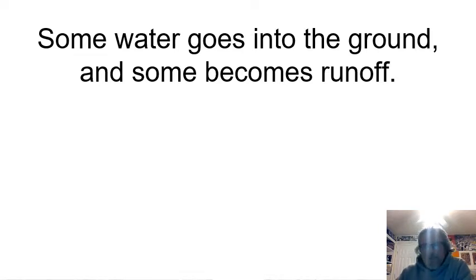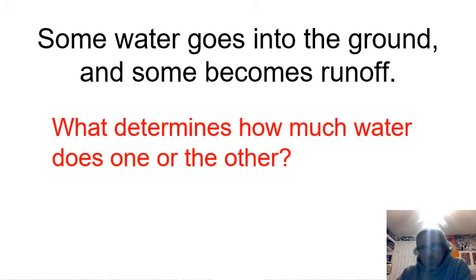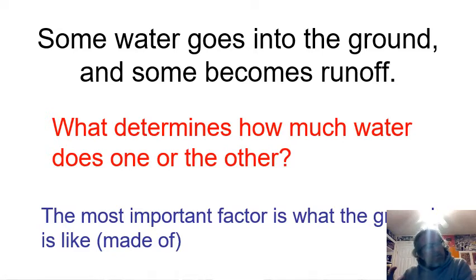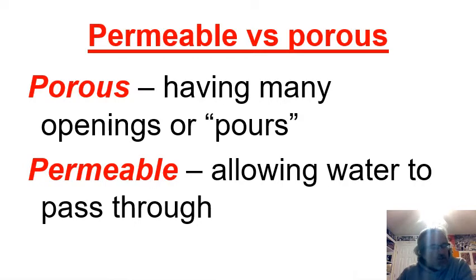Some water goes into the ground and some becomes runoff — it's not an either/or thing, both happen every time it rains. What determines how much goes in the ground and how much becomes runoff? It's primarily determined by what the ground is like: is it steep or flat? Steeper ground means water slides off quicker; flat ground means water soaks in quicker. But the bigger variable is what the ground is made out of, and that leads us to two terms: porous and permeable.